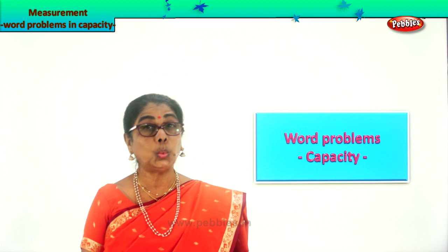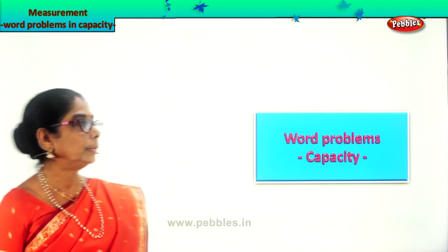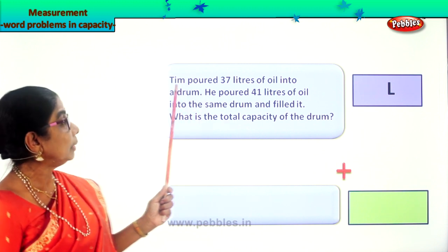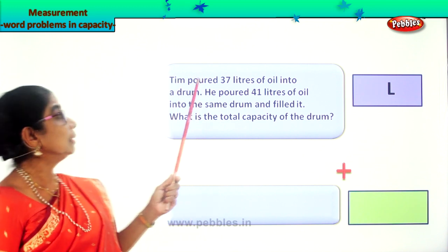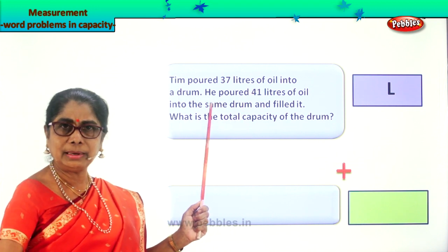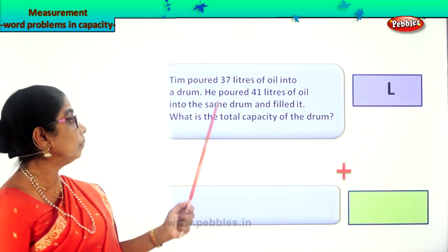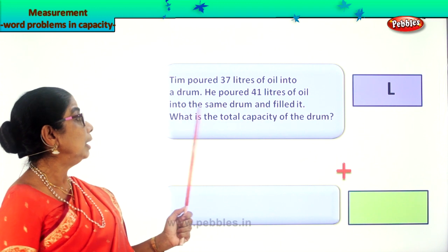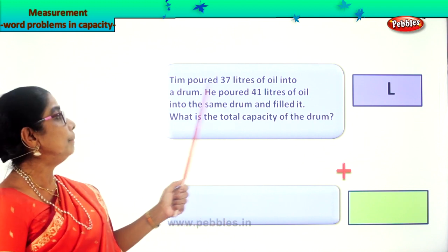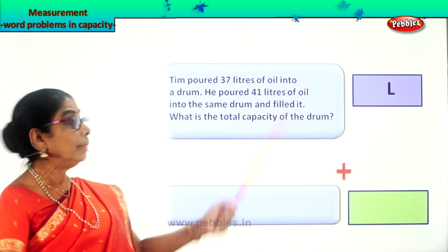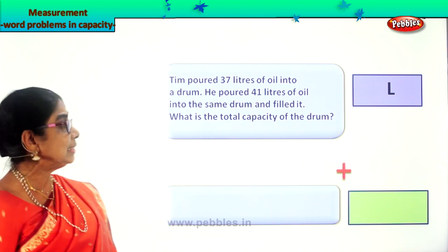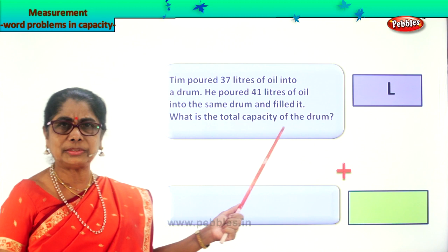Let's look at our first word problem. We will read together and find out together. Tim poured 37 liters of oil into a drum. He poured 41 liters of oil into the same drum and he filled it. Tim poured 37 liters of oil into the drum, then again he poured 41 liters of oil into the same drum to make it full. What is the total capacity of the drum?